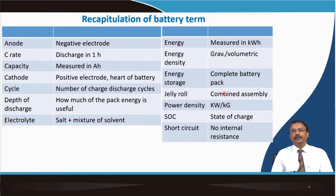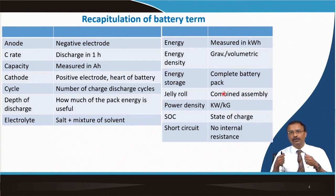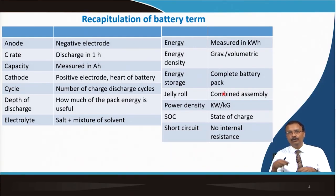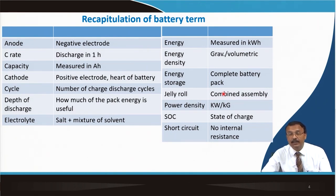It is not only the cell but the total battery pack construction that matters — we will talk about that in forthcoming lectures. The jelly roll is the combined assembly of anode, cathode, tab, and separator, either stacked or rolled and placed in a cylindrical cell. Power density is important — it is kilowatts of power per kilogram of battery.